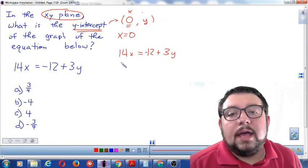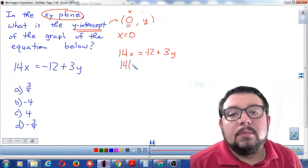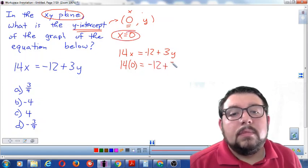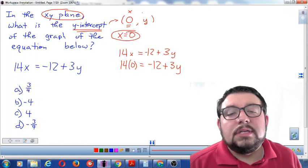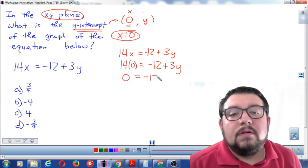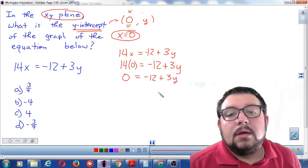I'm going to change the number x to the number zero. Because I know that x equals zero. Because of the key word y intercept. So now 14 times zero makes zero. And I get negative 12 plus 3y.